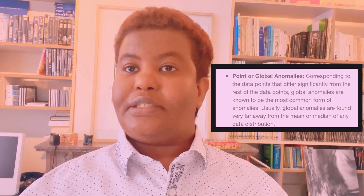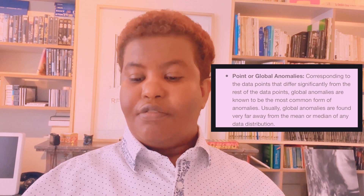In the data science domain, we have three different ways to classify anomalies. Understanding them correctly might have a big impact on how you handle anomalies. The first type is point or global anomalies, corresponding to data points that differ significantly from the rest of the data points. Global anomalies are known to be the most common form of anomalies, and they are usually found very far away from the mean or median of any data distribution.